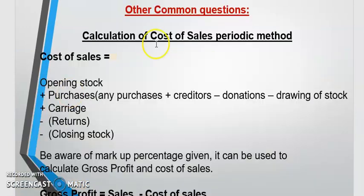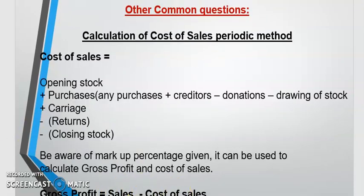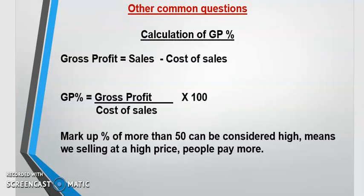Common exam questions include calculation of cost of sales using the periodic method. Opening stock plus purchases plus carriage minus returns minus closing stock gives you cost of sales. Purchases include: purchases plus creditors if bought on credit, minus donations, minus drawings of stock. Gross profit equals sales minus cost of sales. If they ask for gross profit percentage, take gross profit divided by cost of sales times 100 — it's the same thing as markup percentage.